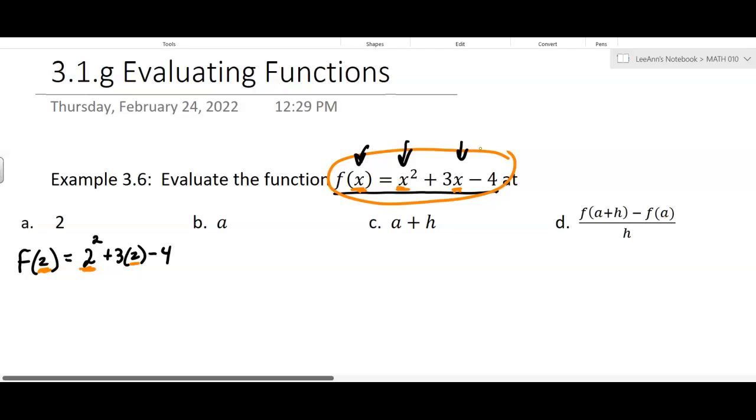Then we have to do the actual calculating. So on the right-hand side, we're going to figure out what that equals. So f of 2 equals 4 plus 6 minus 4, or f of 2 equals 6. So when we evaluate that particular function at 2, it equals 6.